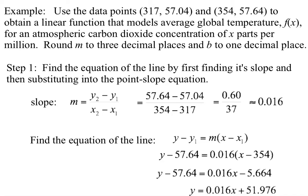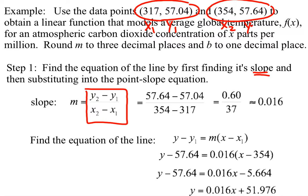So step one, we want you to find the equation of a line by first finding its slope. So we have an ordered pair here, and we have an ordered pair here. If you remember, slope is found by taking the change in y over the change in x. So I'm going to go ahead and call these my ordered pairs x1 and y1 and x2 and y2. And now I substitute it into this slope equation. So I have my y sub 2 minus my y sub 1 over my x sub 2 minus x sub 1. Now I reduce that, and I get an answer with three significant digits of 0.016.